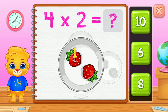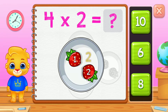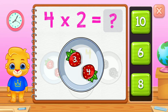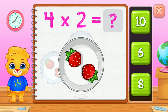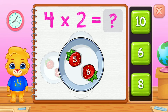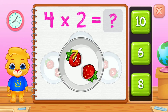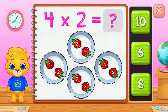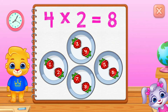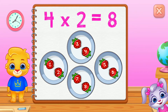1, 2, 3, 4, 5, 6, 7, 8. 4 groups of 2 equals 8.